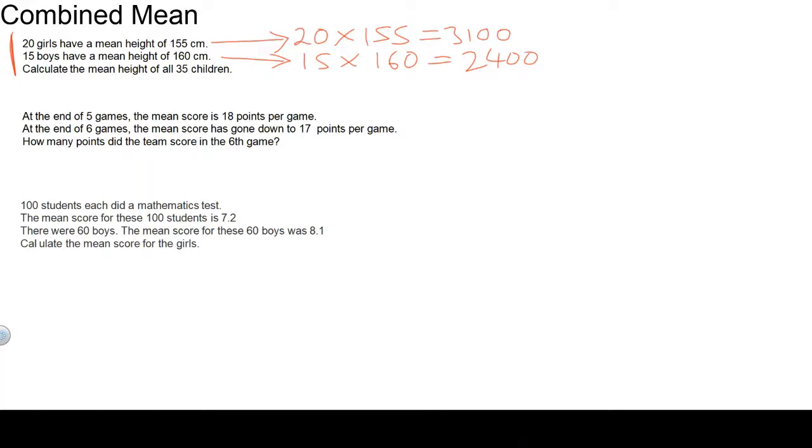I'm trying to work out the mean height of all 35 children, so I need to add up the total heights of these students. That's the total height of those students. There are 35 children altogether. So I now need to do 5,500 divided by 35 pupils. That is 157.1 centimeters rounded. That's the mean height of all 35 children.